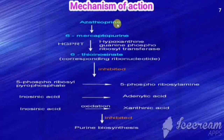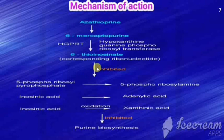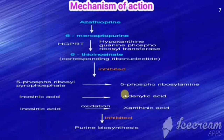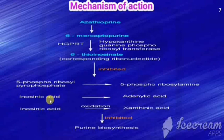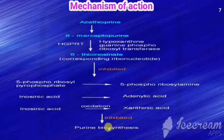Now the mechanism of action of azathioprine: it is a heterocyclic derivative of 6-mercaptopurine and is a prodrug. It is first converted into 6-mercaptopurine, then the same mechanism as 6-MP applies. By means of HGPRT (hypoxanthine-guanine phosphoribosyl transferase), it is converted into the ribonucleotide 6-thioinosinate, which inhibits three processes responsible for purine biosynthesis: conversion of 5-phosphoribosyl pyrophosphate into 5-phosphoribosylamine, conversion of inosinic acid into adenylic acid, and oxidation of inosinic acid into xanthylic acid. Thus purine biosynthesis is inhibited.